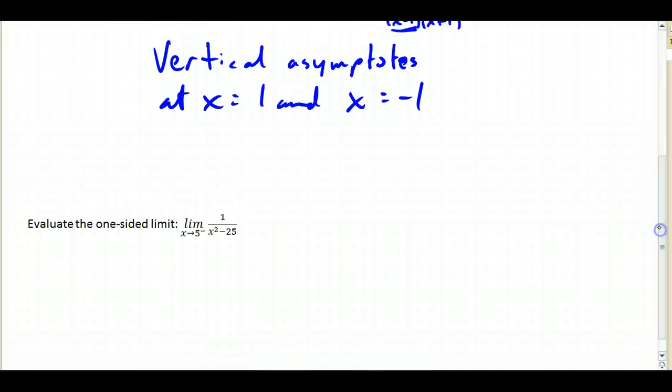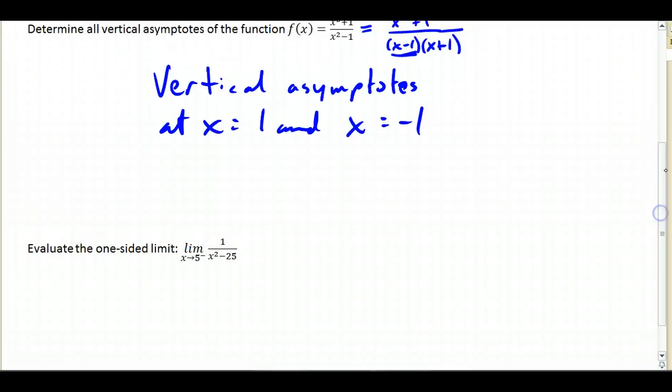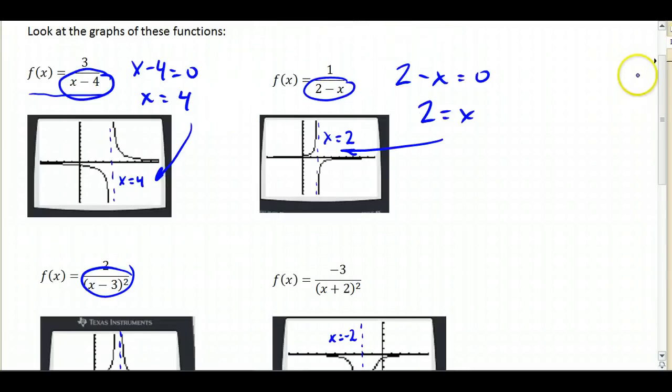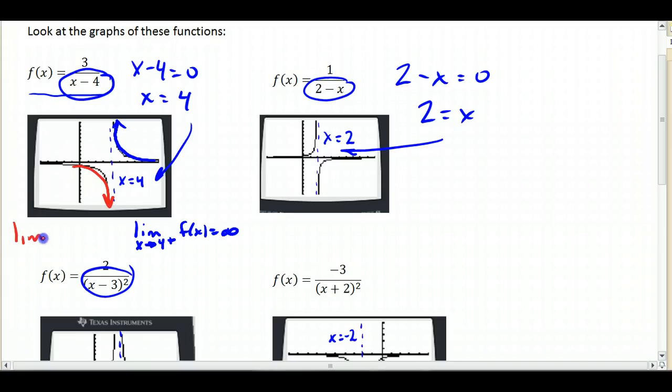Now sometimes you want to know if you're going toward positive infinity or negative infinity, because you'll notice that right here, this is going to positive infinity, so we would say that the limit as x approaches 4 from the right of f of x equals positive infinity, but over here, we're going to negative infinity, so we would say the limit as x approaches 4 from the left of f of x equals negative infinity.